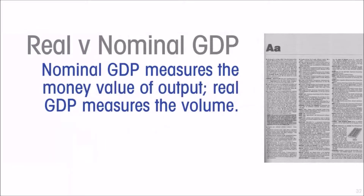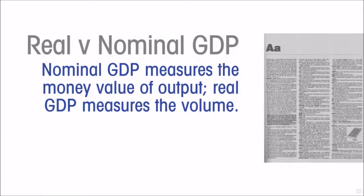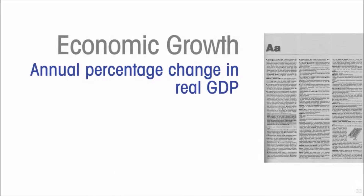We start by making a distinction between real and nominal GDP so that we can understand what we mean by economic growth. Nominal GDP refers to the money value of output, whereas real GDP actually measures the volume of output independent of its prices. Economic growth has to do with the volume, so it is measured by the actual percentage change in real GDP.